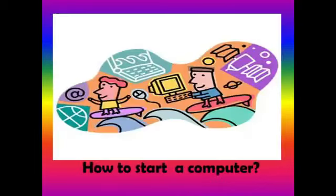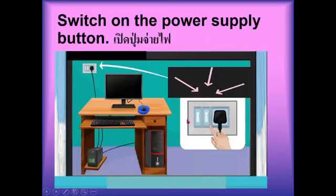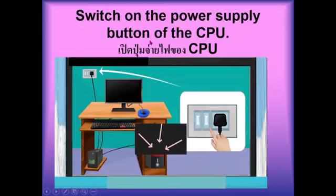First, how to start a computer. Step one: switch on the power supply button. Next, switch on the UPS button. This is the UPS. Then switch on the power supply button of the CPU.